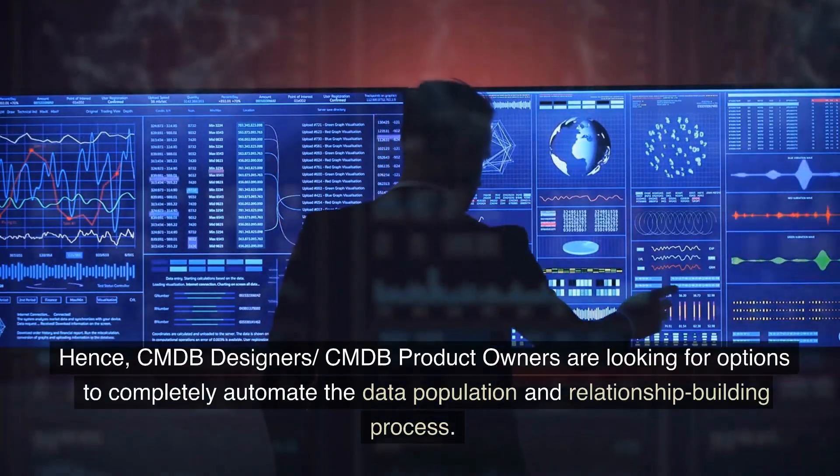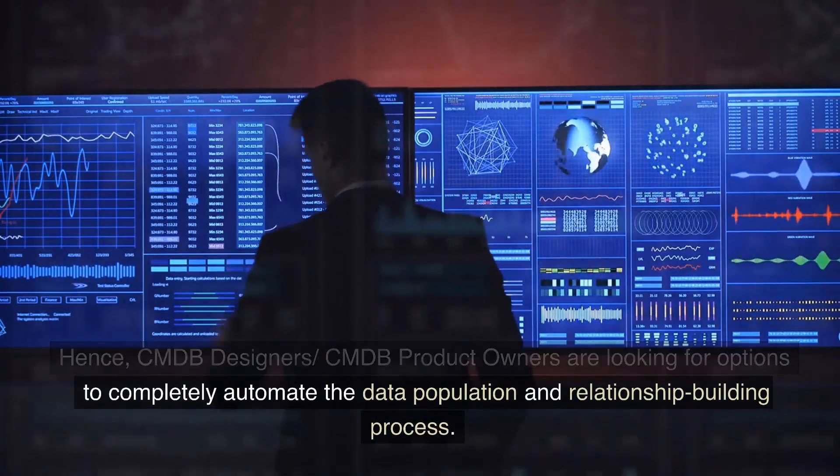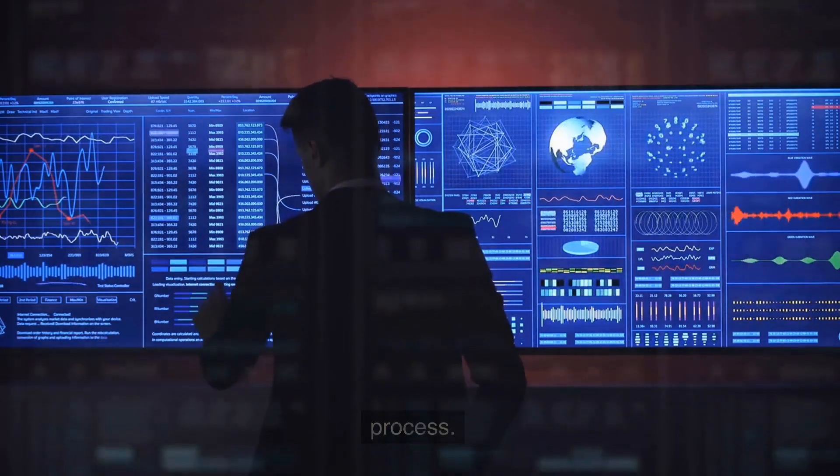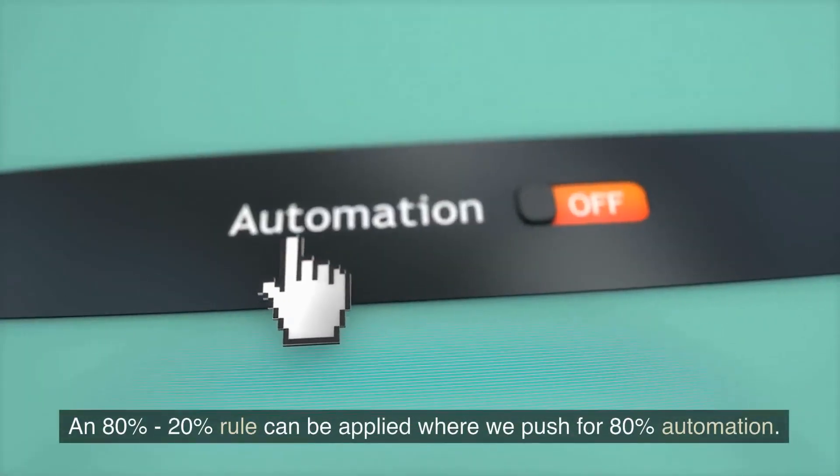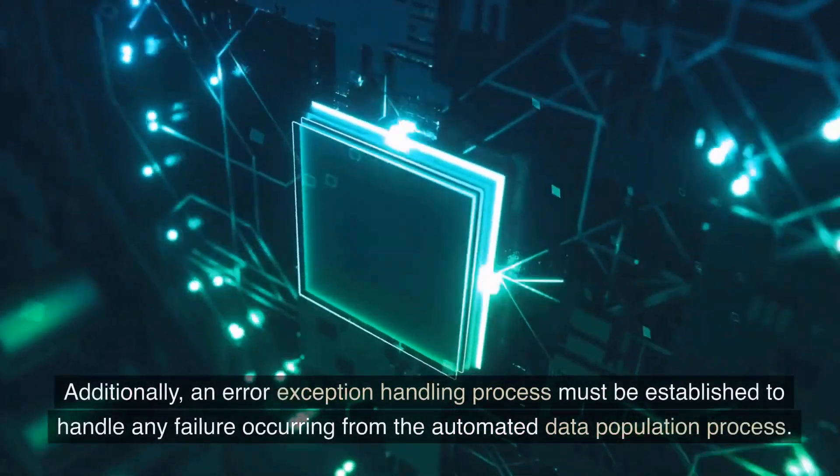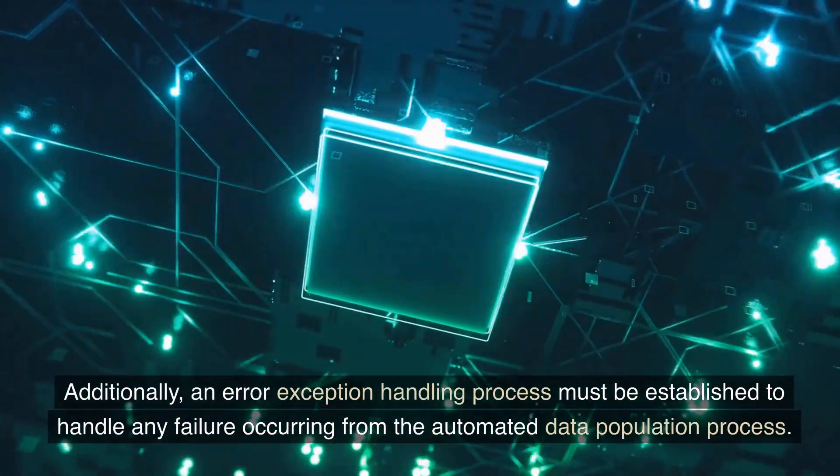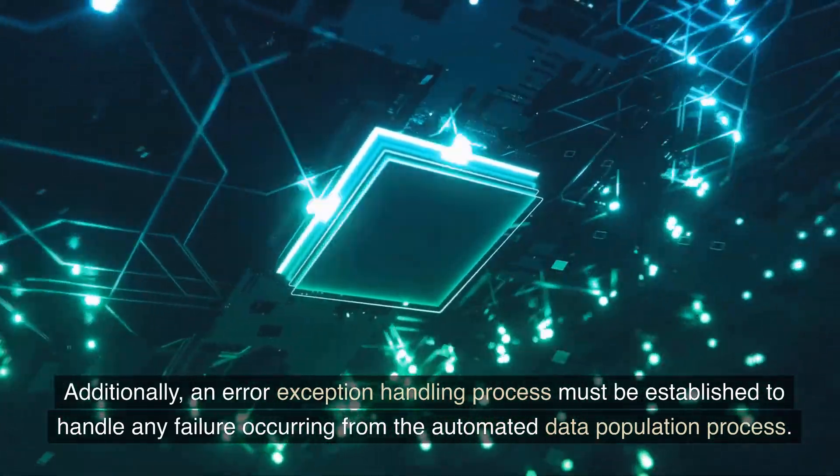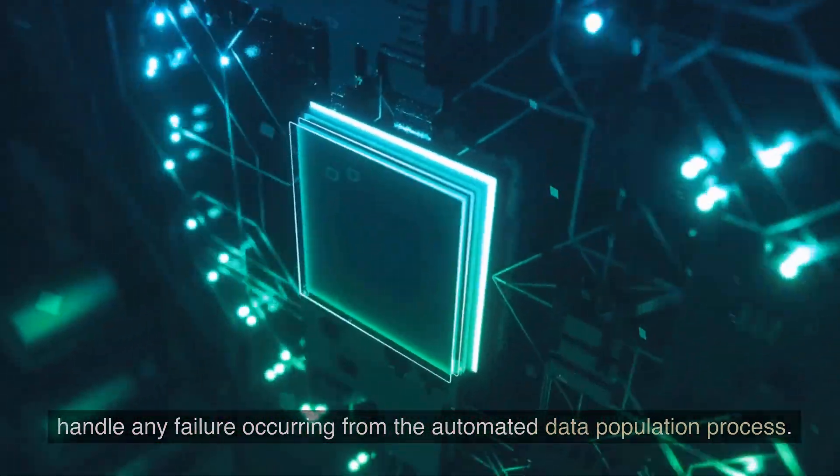An 80%-20% rule can be applied where we push for 80% automation. Additionally, an error-exception handling process must be established to handle any failure occurring from the automated data population process.